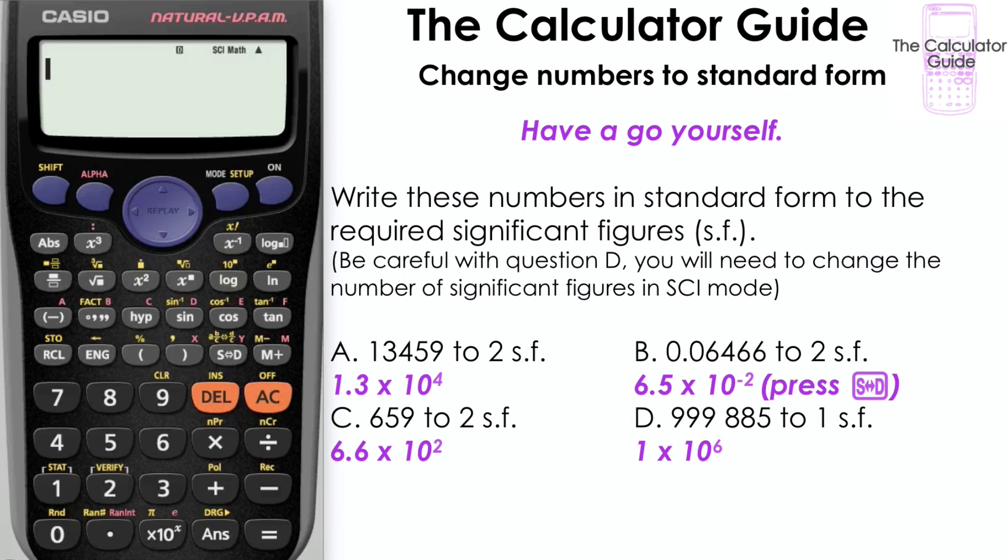And here we have the answers. You may have needed to press SD for question B to get the decimal display. And obviously you needed to be careful with question D. We've got 1 times 10 to the 6 as the answer, which is a million.